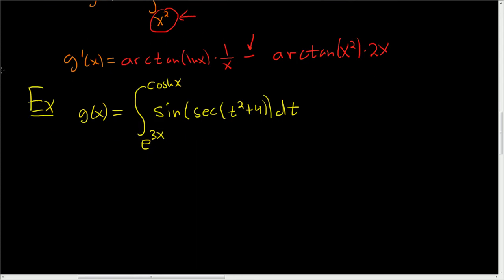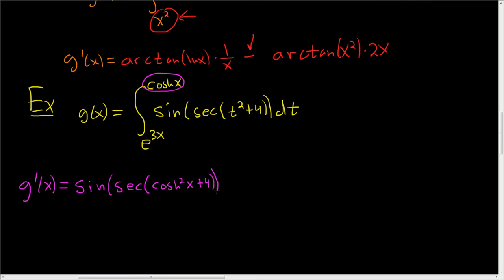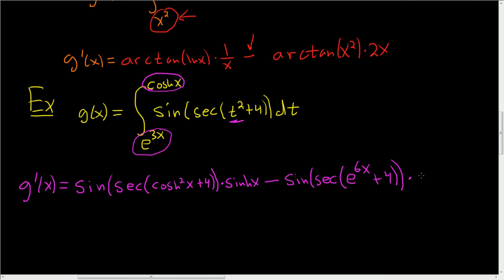But with our extended fundamental theorem of calculus, we are invincible — at least for these problems. For g prime of x, first plug in the cosh function for t: sine of the secant of cosh squared x plus 4. Then multiply by the derivative of cosh, which is sinh. Subtract, and plug in e to the 3x: sine of the secant of e to the 6x plus 4, times the derivative of e to the 3x, which is 3 times e to the 3x — chain rule, derivative of the inside.